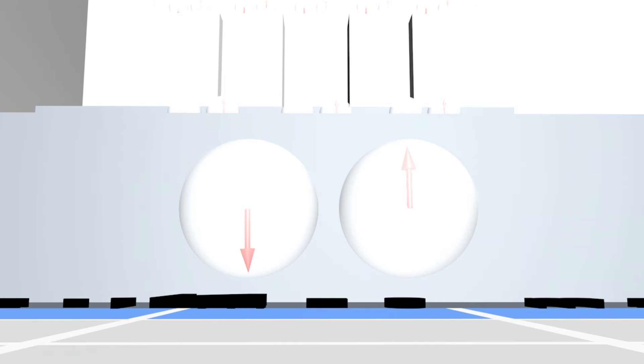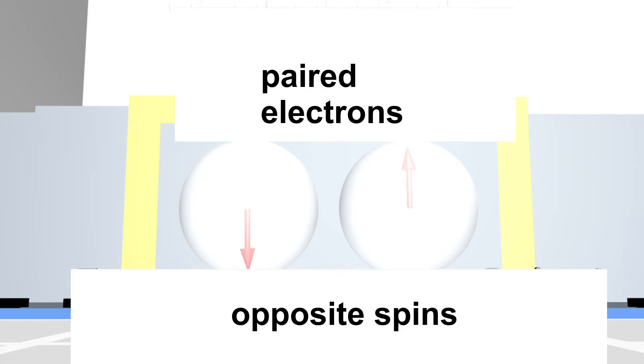The left electron has a spin down and the right electron has a spin up. These two electrons, which have completely identical quantum numbers except for the spin, are called paired electrons.